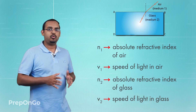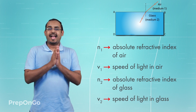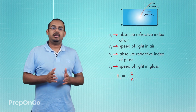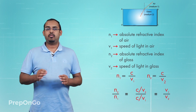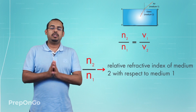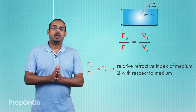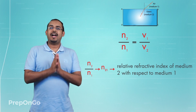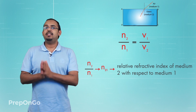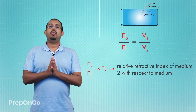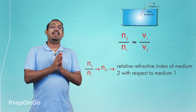We have four values: n1, n2, v1, and v2. If we take the ratio of n2 to n1, we find it equals v1 upon v2, because n1 equals c upon v1 and n2 equals c upon v2. So n2 upon n1 equals v1 upon v2. This value n2 upon n1 is known as the relative refractive index of medium 2 with respect to medium 1, denoted n21, where light is traveling from medium 1 to medium 2. So n21 can be calculated as v1 upon v2 or n2 upon n1.